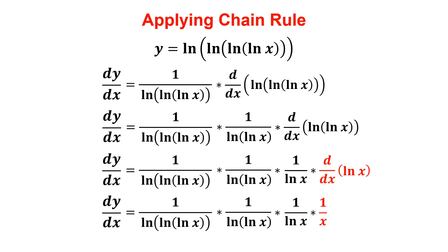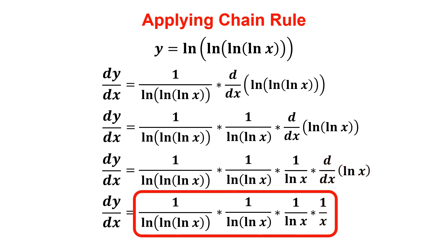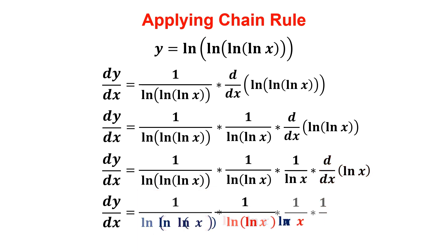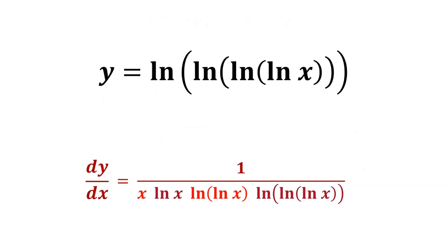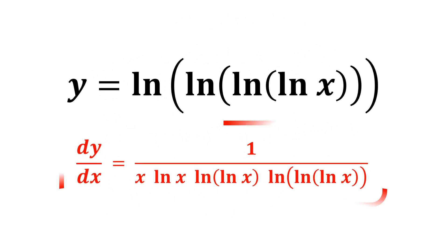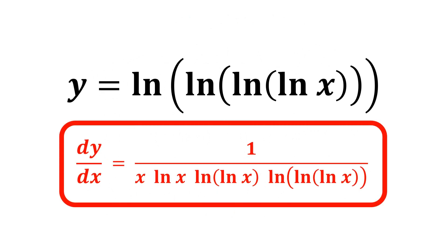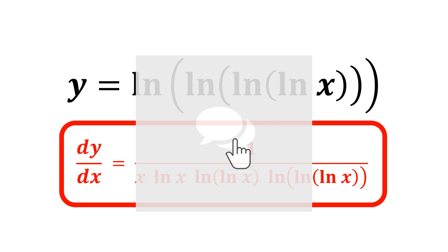And we are done. All that's left is to multiply these terms together. Therefore, in the denominator, we end up with x multiplied by ln x, multiplied by natural log of ln x, and multiplied by natural log of natural log of ln x. We have just found the derivative of natural log of natural log of natural log of natural log of x.